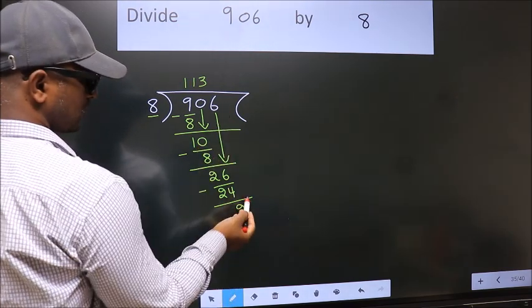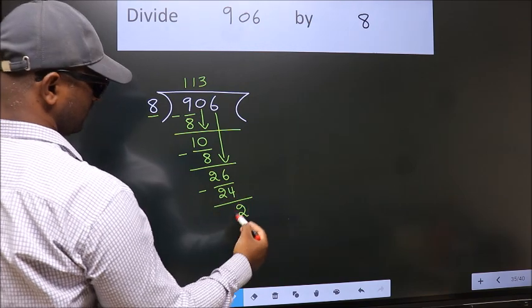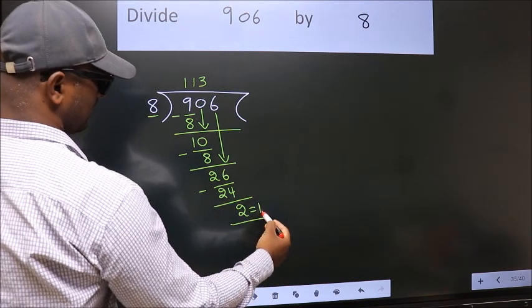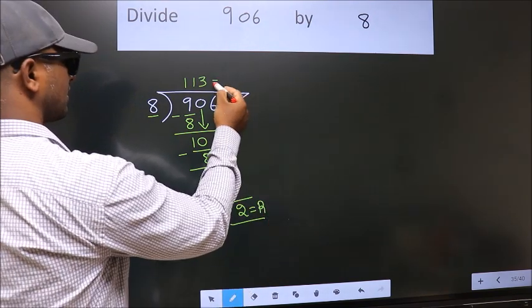No more numbers to bring it down. So, we stop here. This is our remainder. This is our quotient.